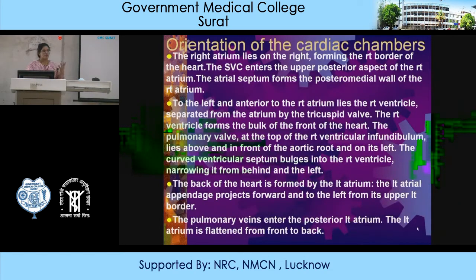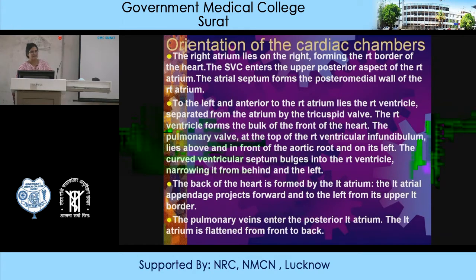What is the orientation of the cardiac chambers? The right atrium lies on the right side, forming the right border of the heart. The SVC enters the upper posterior aspect of the right atrium. The atrial septum forms the posterior medial wall of the right atrium. To the left and anterior to the right atrium lies the right ventricle, separated from the atrium by the tricuspid valve. The right ventricle forms the bulk of the front of the heart. The pulmonary valve at the top of the right ventricular infundibulum lies above and in front of the aortic root and on its left side. The curved ventricular septum bulges into the right ventricle.